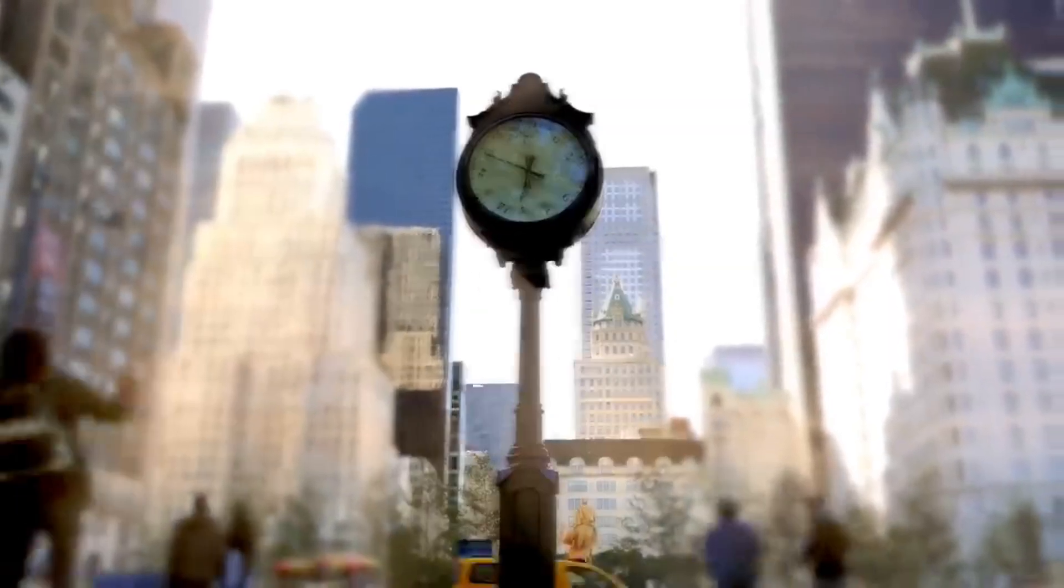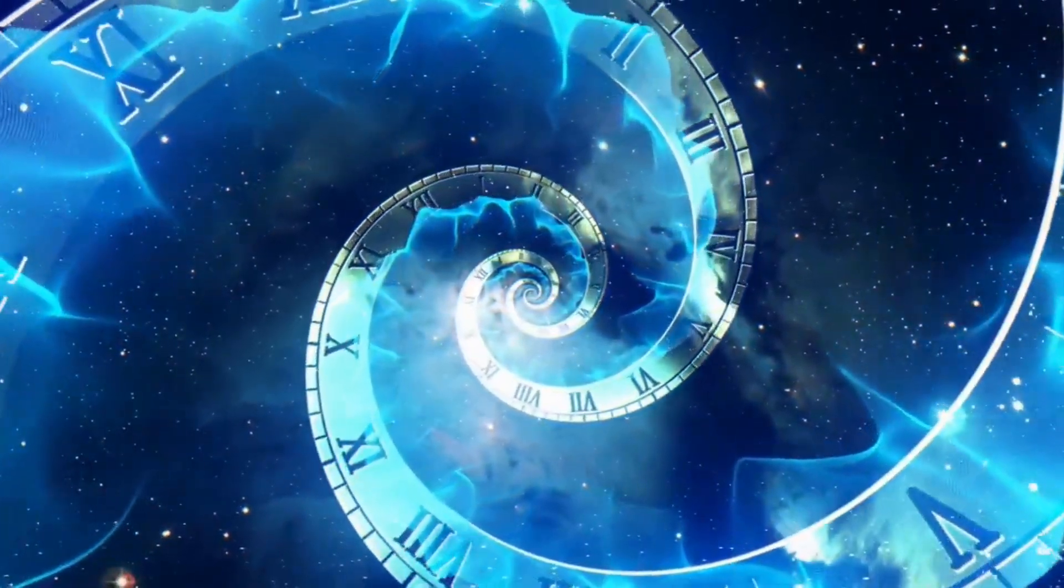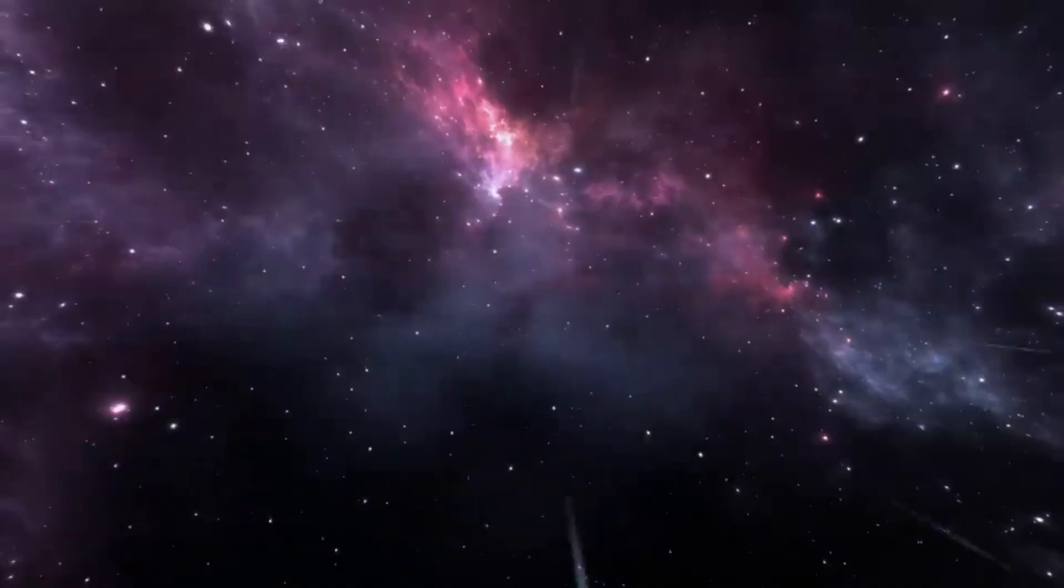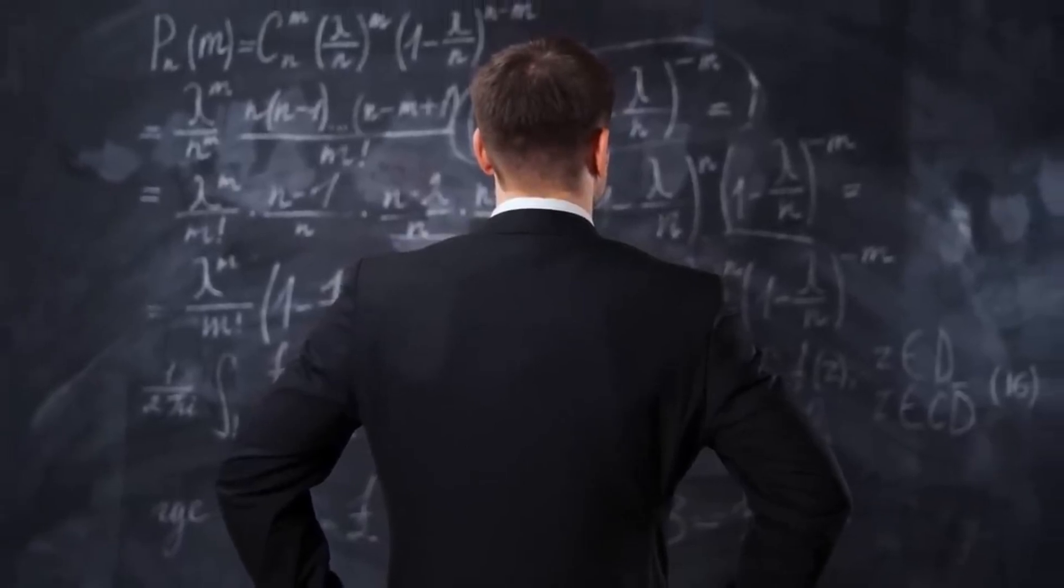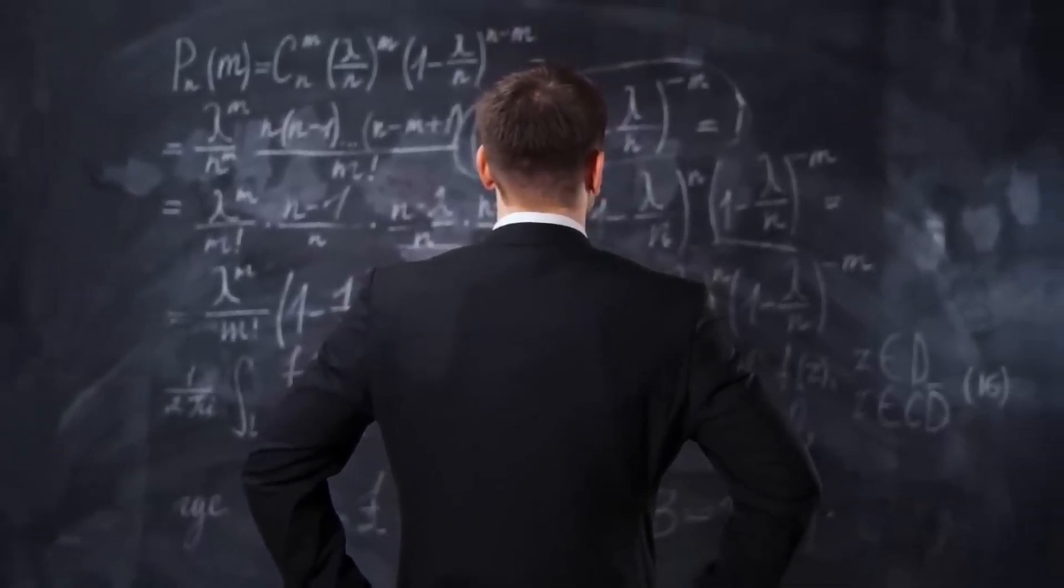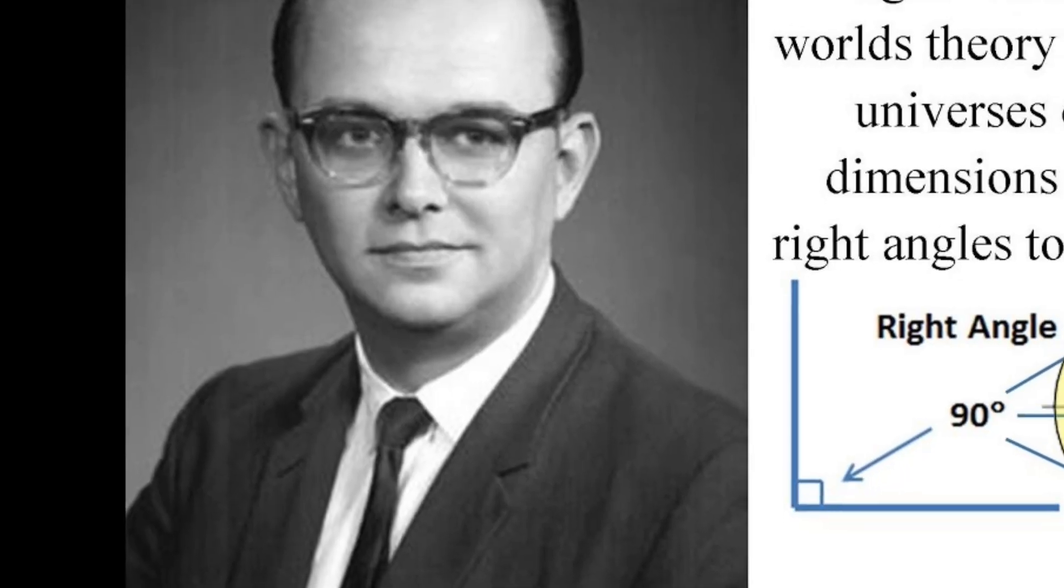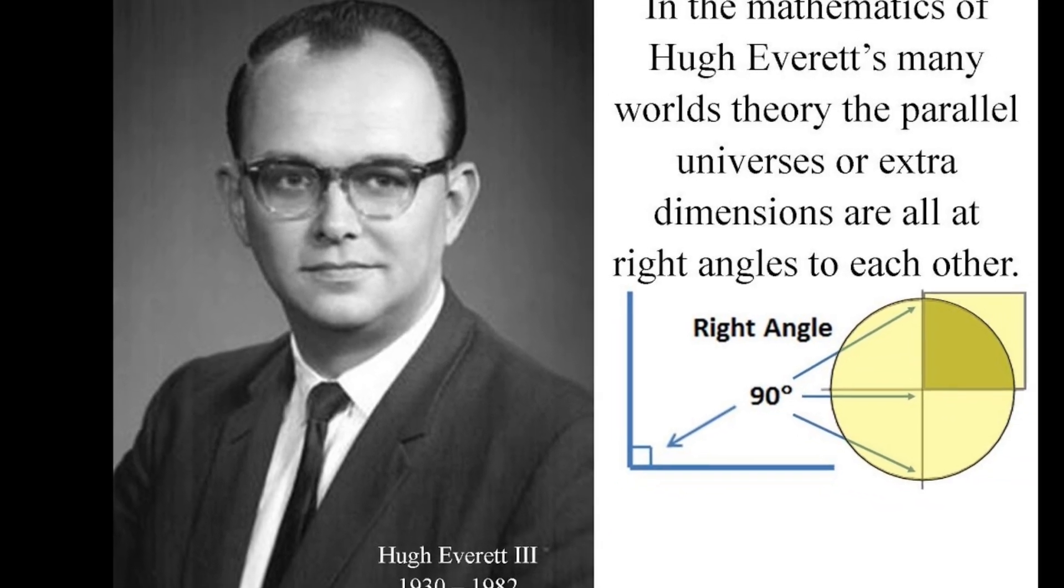In recent times, modern scientific theories have also attempted to add credibility to the concept of multiverses, like many worlds' interpretation of quantum mechanics, which use a mathematical model to predict the behavior of matter. Proposed by Hugh Everett in 1957, this concept forecasts the possibility of alternate realities.